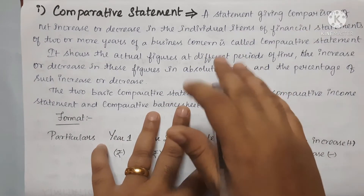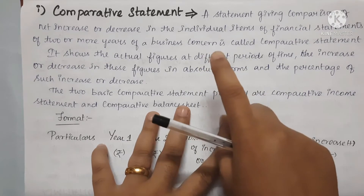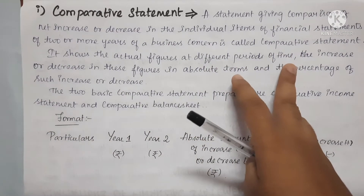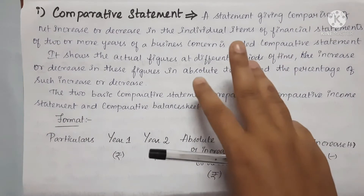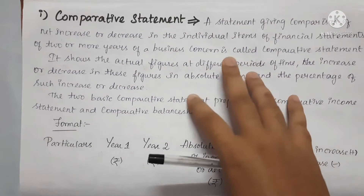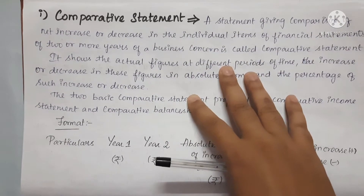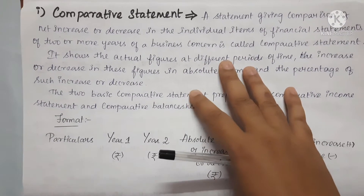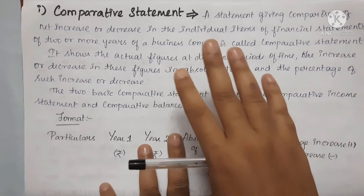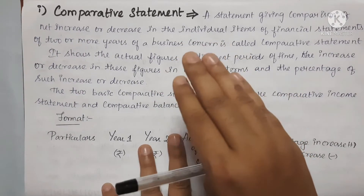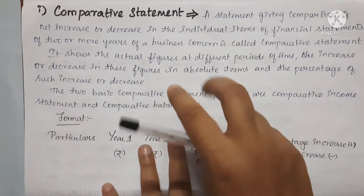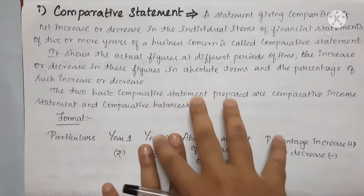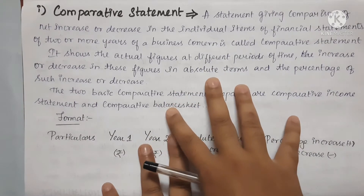The first tool is the comparative statement. Next is the common size statement. Third is trend analysis. Fourth is the fund flow statement. Next is the cash flow statement — fund flow analysis and cash flow. So these five tools are prepared, and we will look at them one by one. In this video, we will see the first topic.